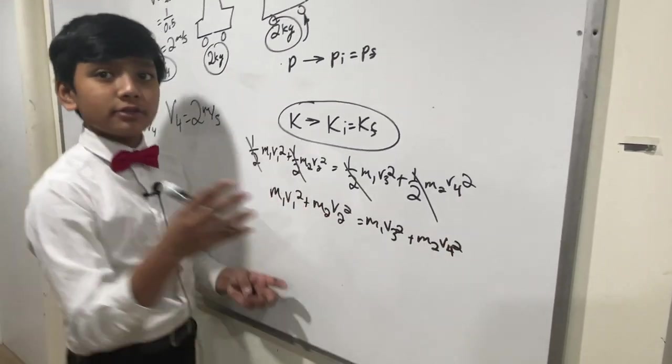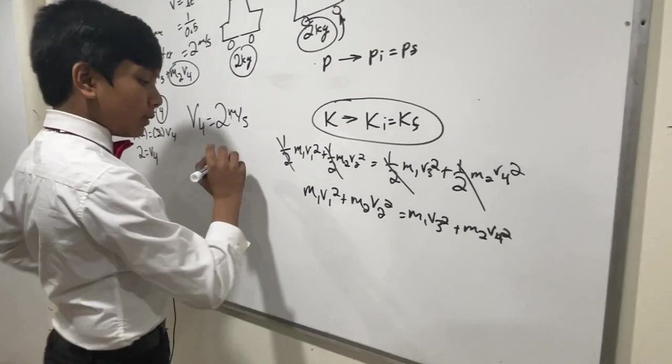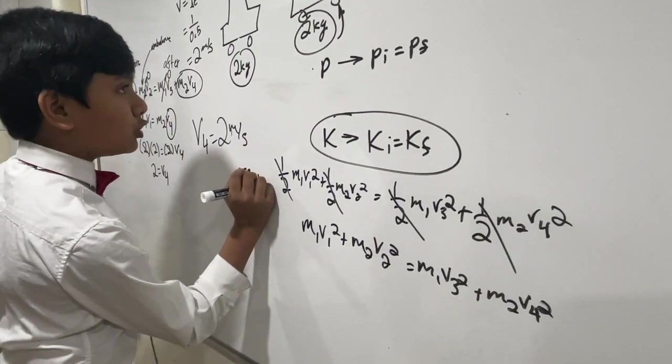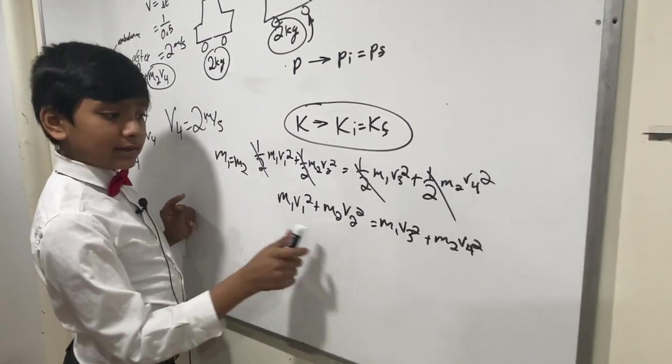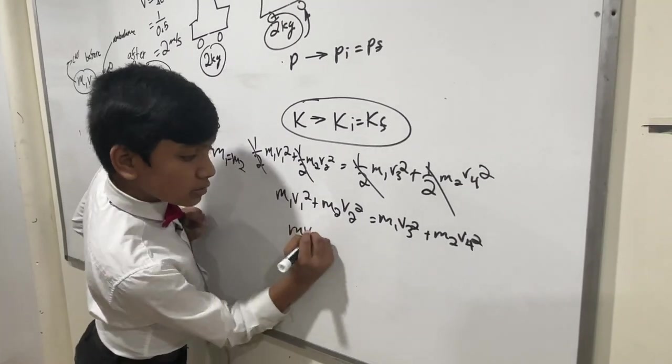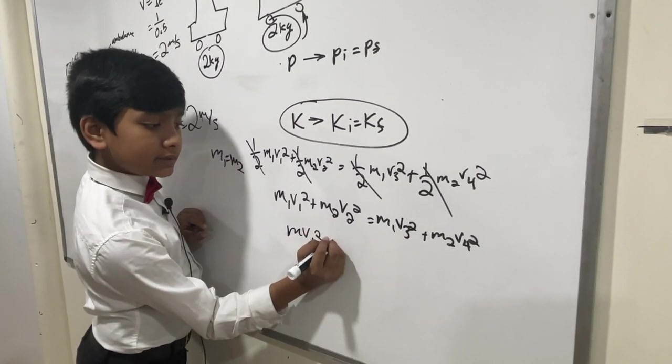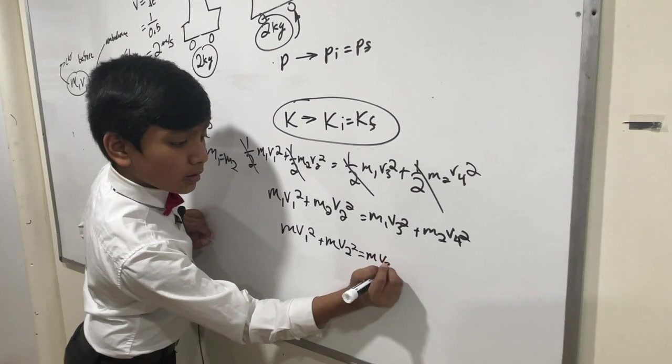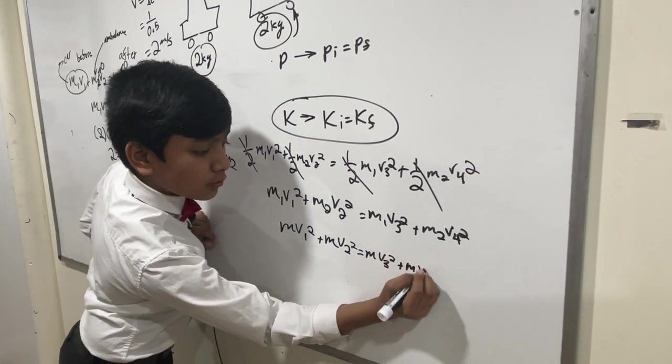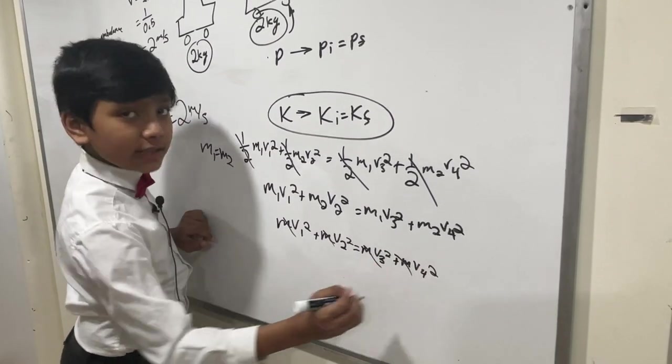But it's here where we can do something a little sneakier, because remember that M1 is equal to M2. They're both 2 kilograms. So, let's just write them as both M. So, we have M V1 squared plus M V2 squared is equal to M V3 squared plus M V4 squared. And now, this gives us a satisfying cancel.